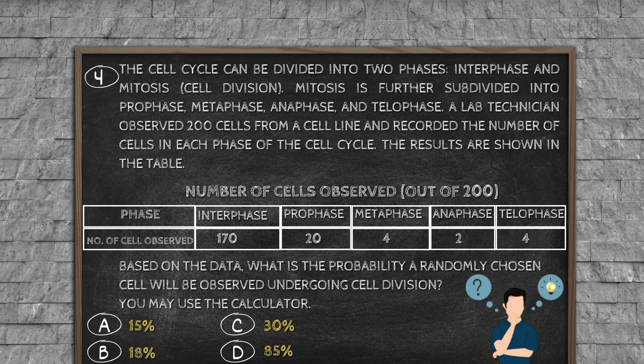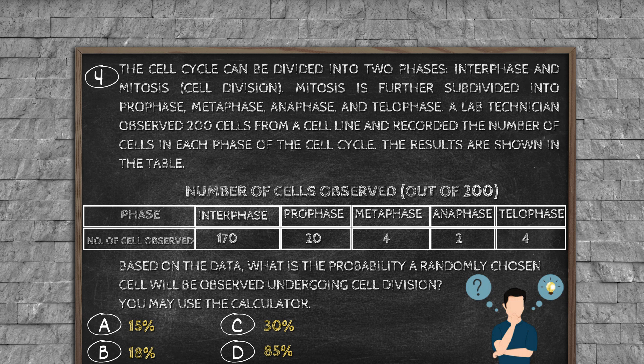Question number 4: The cell cycle can be divided into two phases: interphase and mitosis (cell division). Mitosis is further subdivided into prophase, metaphase, anaphase, and telophase. A lab technician observed 200 cells from a cell line and recorded the number of cells in each phase of the cell cycle. The results are shown in the table. Number of cells observed out of 200. Phase: Interphase: 170, Prophase: 20, Metaphase: 4, Anaphase: 2, Telophase: 4. Based on the data, what is the probability a randomly chosen cell will be observed undergoing cell division? You may use the calculator. Option A: 15%, option B: 18%, option C: 30%, option D: 85%.